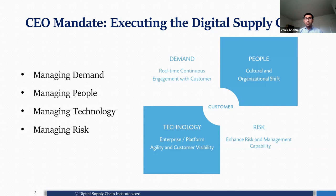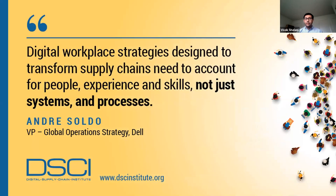In these four buckets: demand is about how to stimulate demand; people is focused on cultural and organizational shift, which the pandemic has accelerated due to work-from-home situations; technology is a supportive tool for digital supply chain transformation; and when you move to a direct-to-consumer or e-commerce model, it enhances your risk, making risk management a real priority. For today's session, we'll focus on the people aspect.